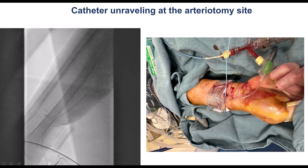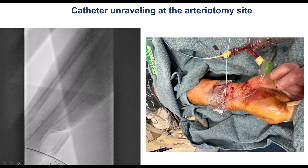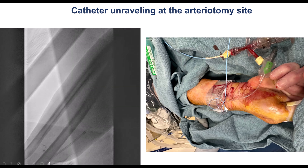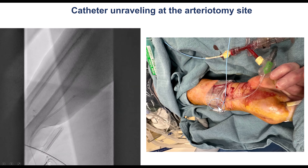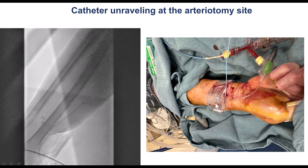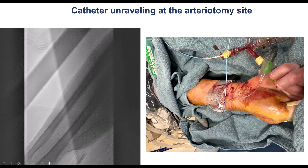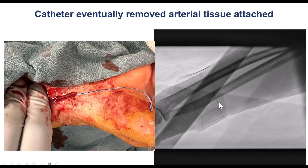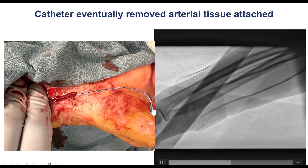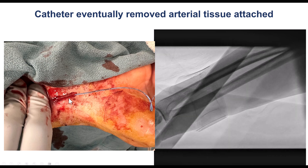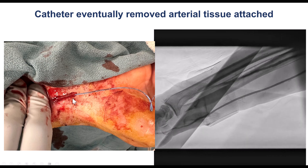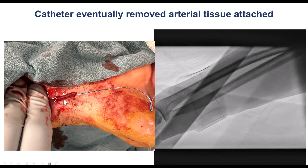This is how the catheter looks — we were able to retrieve most of it. Unfortunately, the catheter became unraveled toward the end of retrieval attempts. The catheter did come out, but it also came with a piece of tissue highly suggestive of the radial artery. So essentially, we had an avulsion of the radial artery.